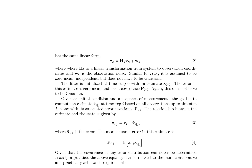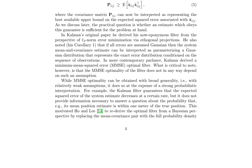The Kalman filter operates on linear state space models, with the relationship between the system's state and measurements given by equations 1 and 2. The filter is initialized at time step 0 with an estimate x0|0 and an error covariance p0|0, which do not have to be Gaussian. The goal is to compute an estimate xi|j at time step i based on all observations up to time step j, along with its associated error covariance pi|j. The relationship between the estimate and the state is given by equation 3, and the mean squared error in this estimate is given by equation 4.